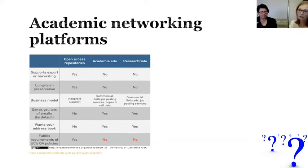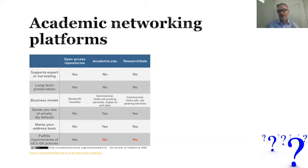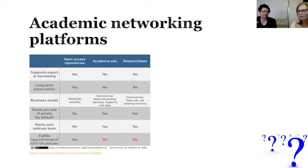Just responding to takedown notices isn't necessarily enough to give platforms immunity from publishers pursuing them legally. We had a difficulty where an article was published illegally by a predatory publisher and appeared on academia.com. We asked the platform to take it down and it proved very difficult because the author themselves hadn't posted it. Once there have been downloads, you've lost control of that version.